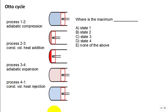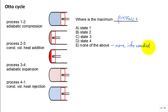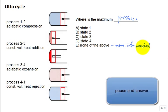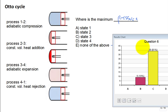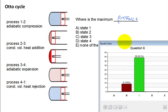Here's another clicker question. For the Otto cycle — I remind you the process one to two, etc. — where is the maximum pressure? Is it at state one, state two, state three, state four, or none of the above? A lot of us say it's at state three. Where is state three? At the end of the constant volume heat addition — that's exactly right.